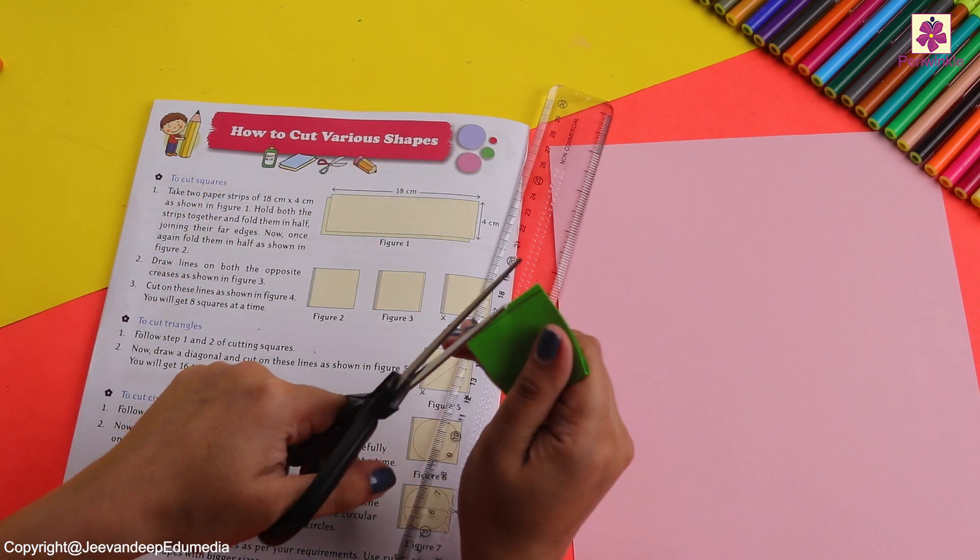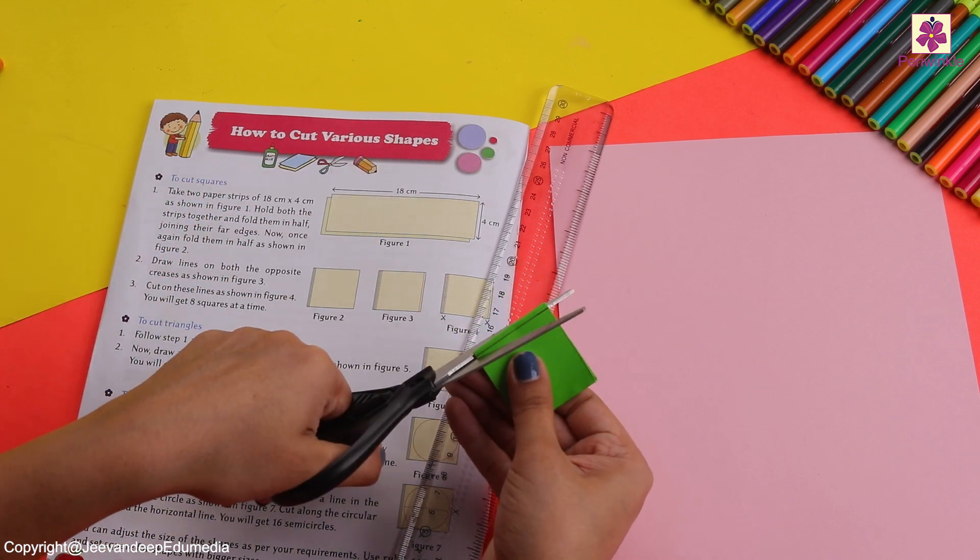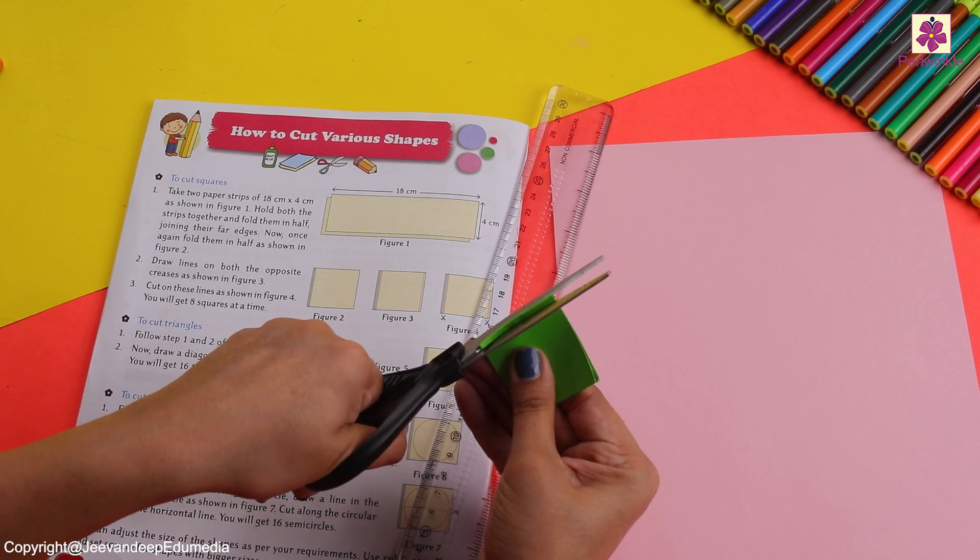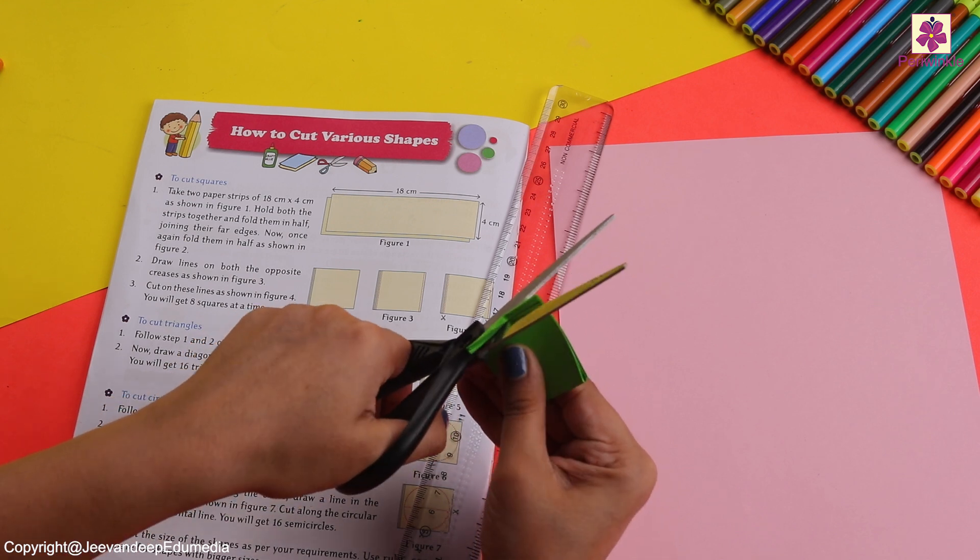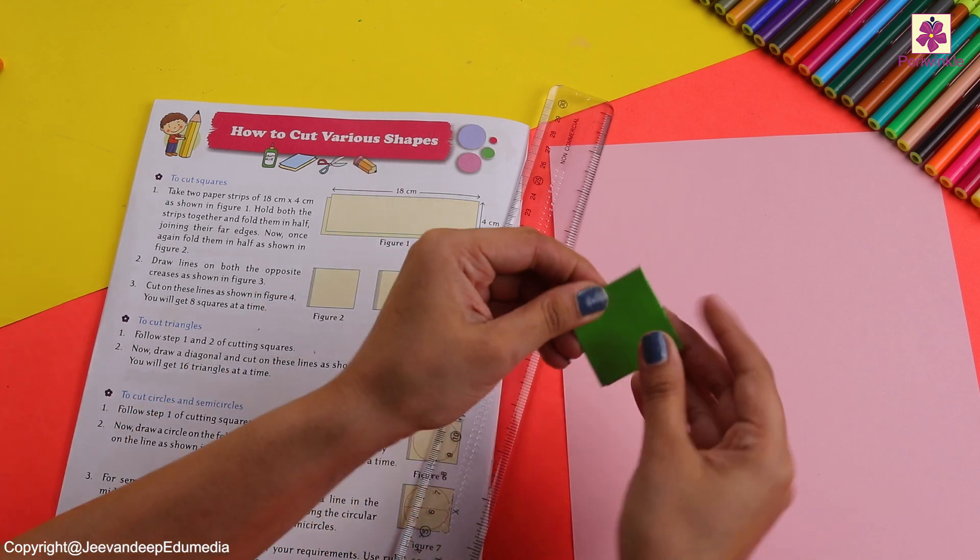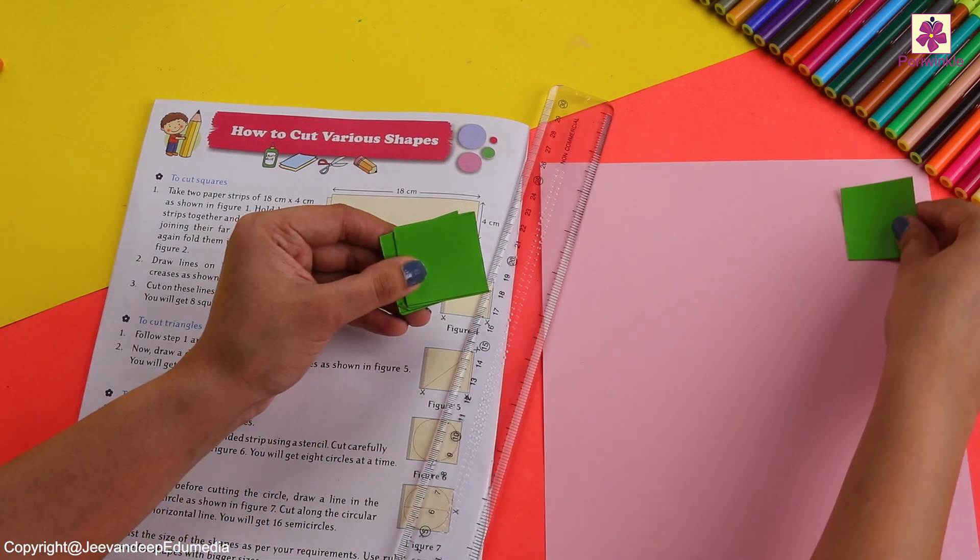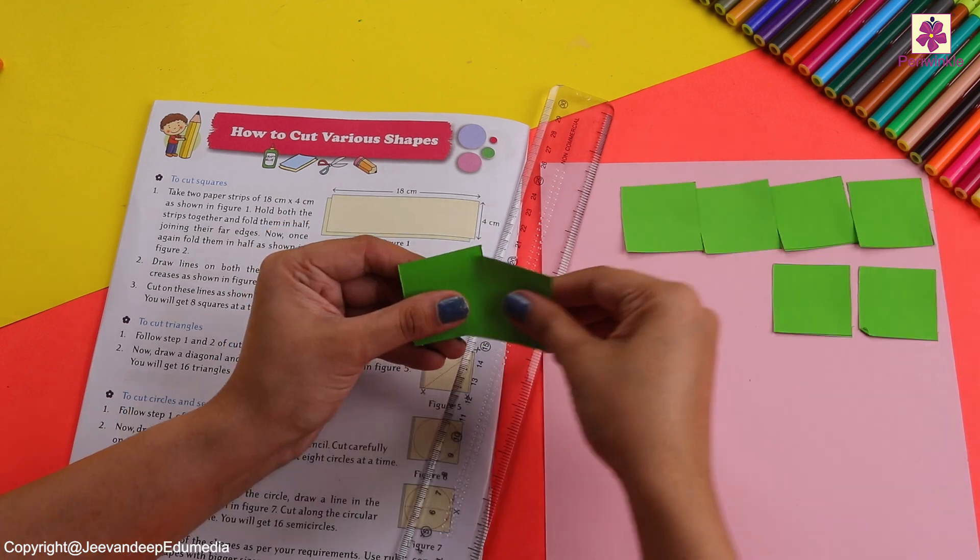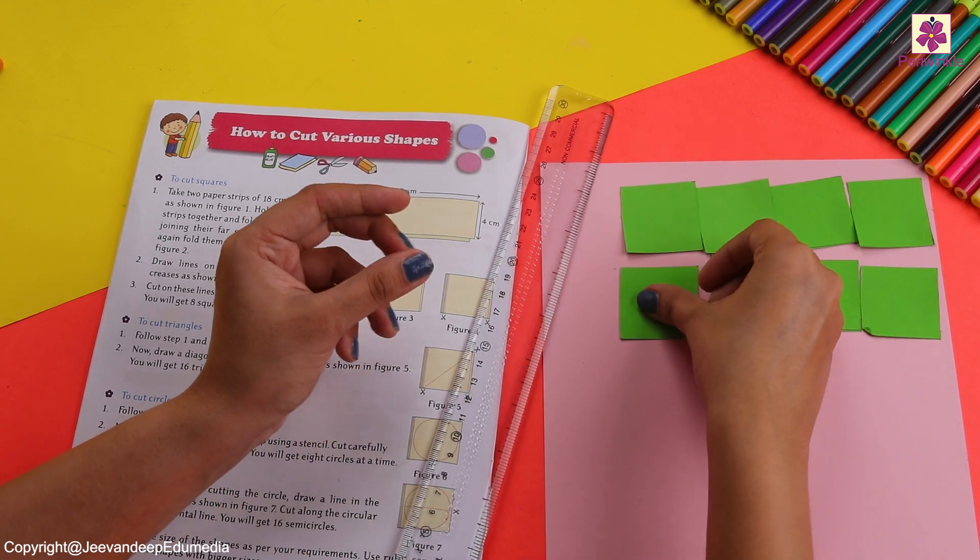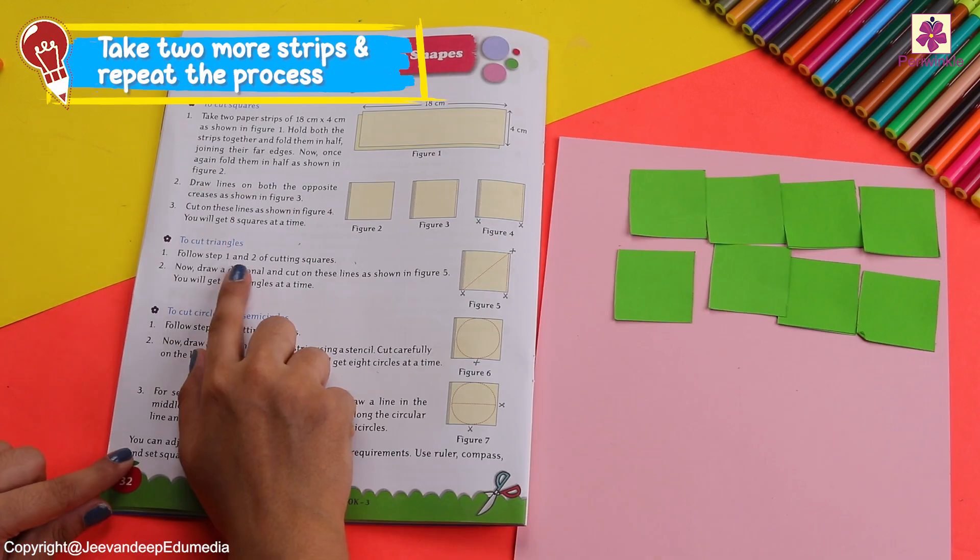That's amazing! Let's cut it on the other side as well. Are you ready for the magic? Well, what do you see? We have multiple squares at a time, there are eight of them.